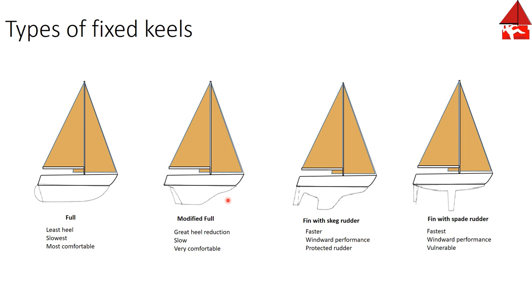Next is a fin keel with a skeg rudder. Fin keels are designed to be more of a performance boat, faster than the two we've discussed so far. The fin keel actually has better performance to windward than the full or modified full because with reduced wetted surface they can go faster and point closer to the wind. The fin keel has an extra structural member attached to the rudder that helps protect the rudder from groundings and from debris.